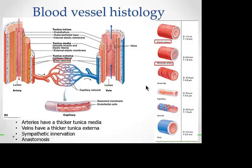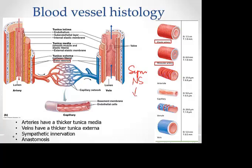Reviewing blood vessel histology: the tunica media is thicker in arteries, while the tunica externa is thicker in veins. The muscle of the arterial wall is innervated by the sympathetic nervous system. In most parts of the body — like the skin and organs — the sympathetic nervous system causes vasoconstriction, meaning it constricts the blood vessels. The sympathetic nervous system innervates the muscle in the tunica media.